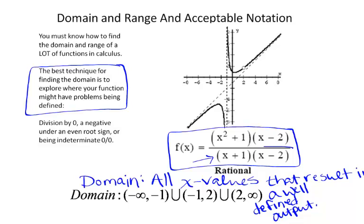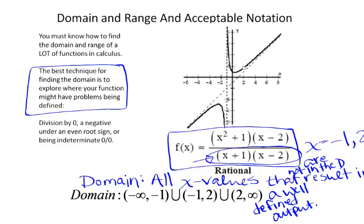For this rational function, the values x equals negative one and x equals two are not in the domain because they give us division by zero. So we need to throw those values out. Here is the acceptable notation for throwing those values out of your domain.